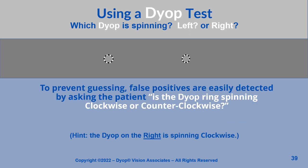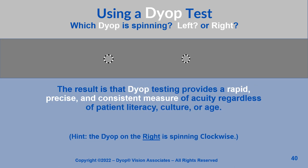To prevent guessing, false positives are easily detected by asking the patient: is the dyop ring spinning clockwise or counterclockwise? The result is that dyop testing provides a rapid, precise, and consistent measure of acuity, regardless of patient literacy, culture, or age.